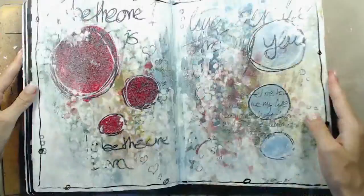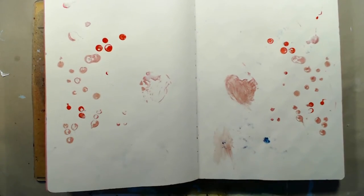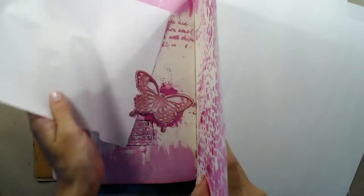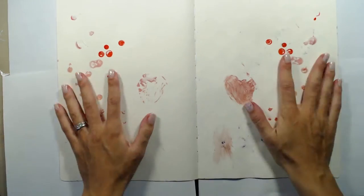As usual I am using my Dylusions creative journal, and today I'm using my large one. I'm just flipping through the pages here to find one that I want to work on, and I chose this page which has a few dots of ink on it already. These dots are actually dried Stickles glue, and I used this page when I had to clean out some of the bottles that dried up a bit before.